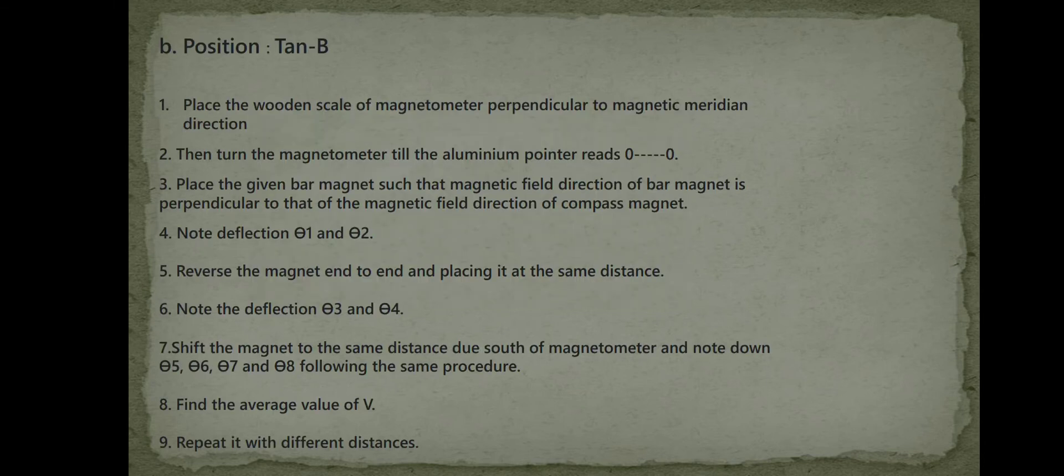Ten B position. Place the wooden scale of the magnetometer perpendicular to the magnetic meridian direction. Then turn the magnetometer till the aluminum pointer reads 0 to 0.